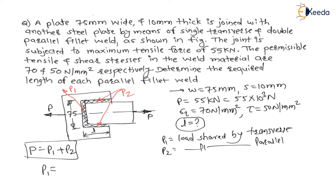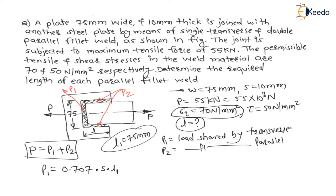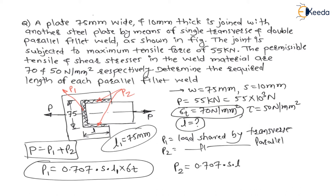P1, the load shared by the transverse fillet weld, equals 0.707 × S × L1 × σT, where L1 is the length of the transverse fillet weld = 75 mm, and σT is the tensile stress, because transverse means perpendicular, which induces tensile stress. P2, the load shared by parallel fillet welds, equals 0.707 × S × L × τ × 2, multiplied by 2 because there are two parallel fillet welds.